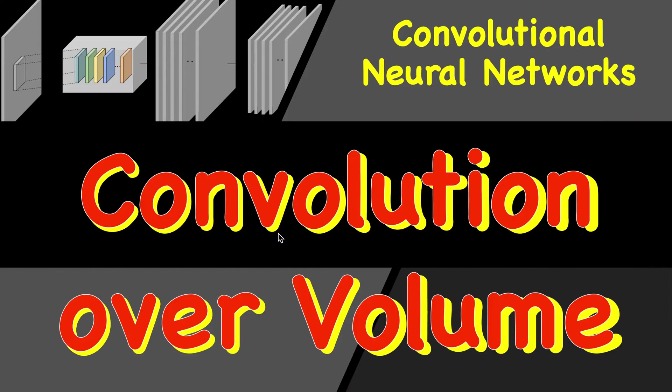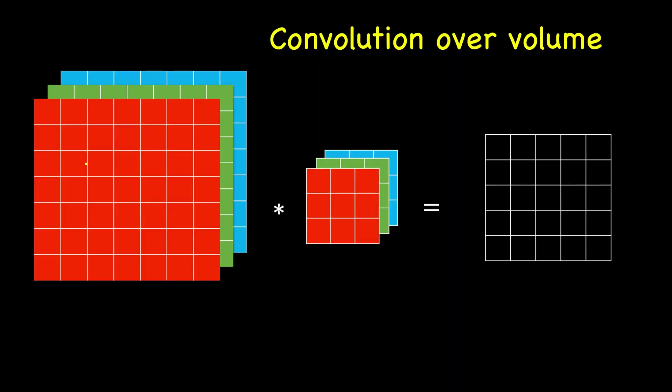So far we have seen convolution over a 2D image, how to perform convolution on a 2D image and a 2D filter. Now we will see how to perform convolution over volume. Instead of having just grayscale pixel values, our image has multiple channels. In particular, let's say we have three channels, an RGB channel.